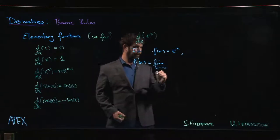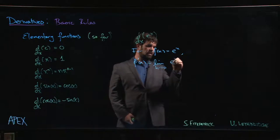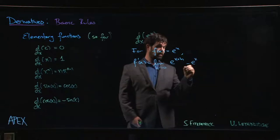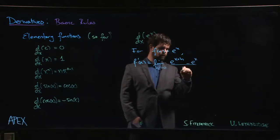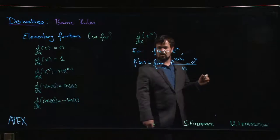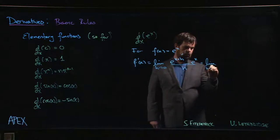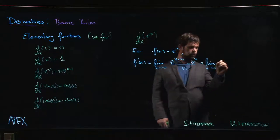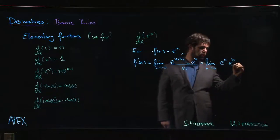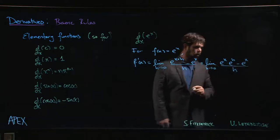The limit as h goes to 0 of f of x plus h. So in this case, e to the x plus h minus f of x, e to the x, e to the x over h. All right, what do you do with that? Well, if you remember your laws of exponents, you might try writing this first term as e to the x times e to the h minus e to the x over h.